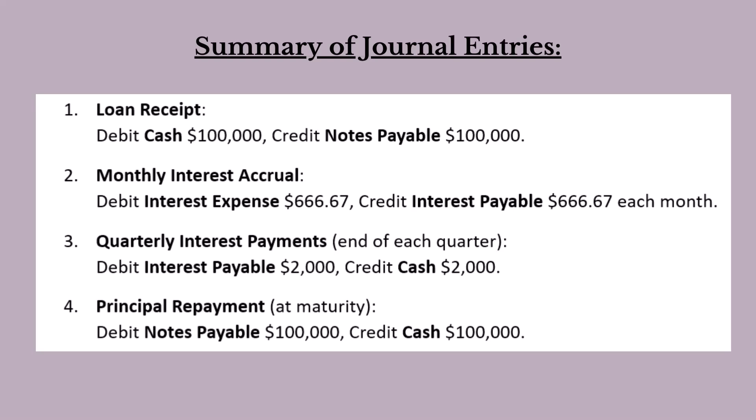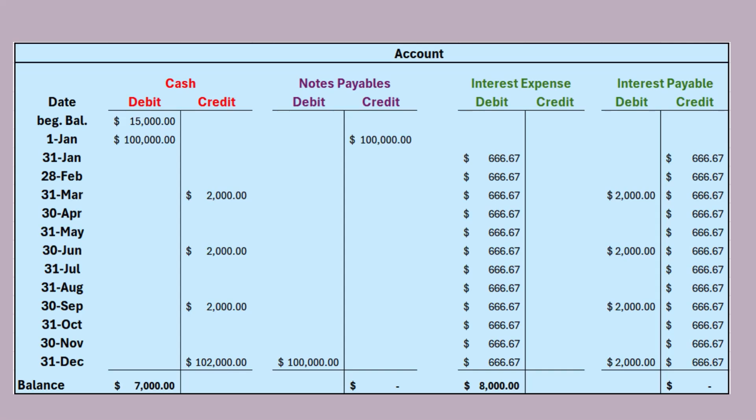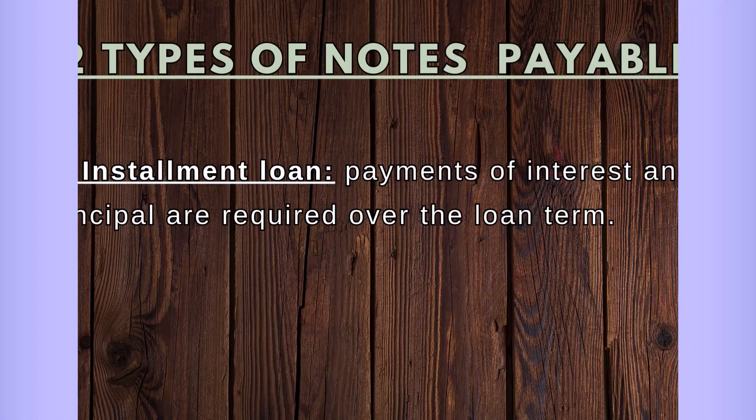And here's a picture of the accounts in T-account format. The second common type of notes payable is an installment loan. Installment loans are commonly used by businesses to finance long-term investments or capital expenditures. These loans are structured to be paid back in monthly installments, which include both principal and interest.